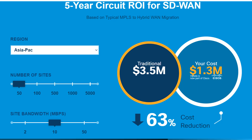Let's talk about ROI. This calculation and snapshot is taken from the Cisco website, and it talks about the five-year circuit return on investment from SD-WAN technology. This model is based on a typical MPLS to hybrid WAN migration. Choosing the Asia-Pacific region with 50 sites each having 10 Mbps connectivity, traditionally a customer had to spend 3.5 million dollars, and after migration the cost becomes 1.3 million — an overall cost reduction of 63 percent.